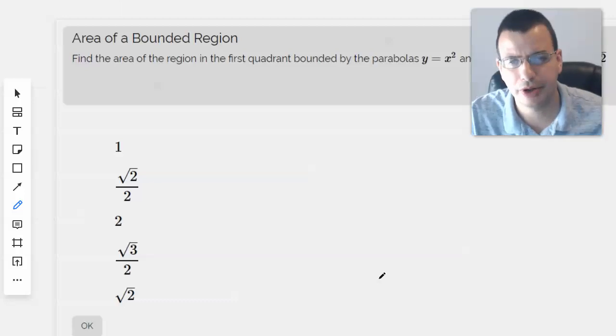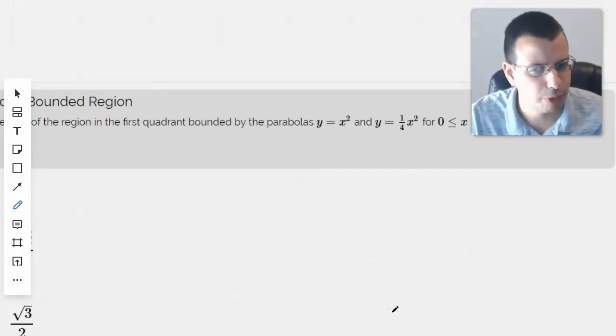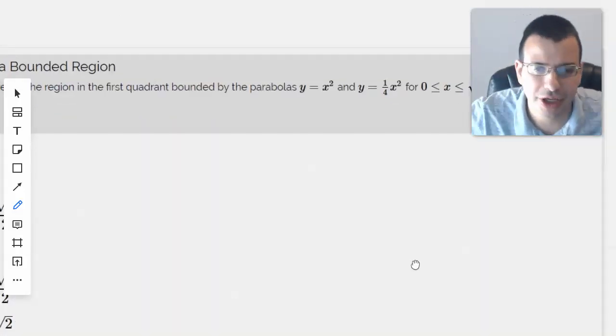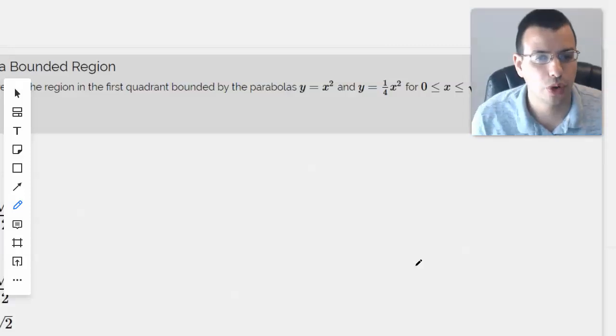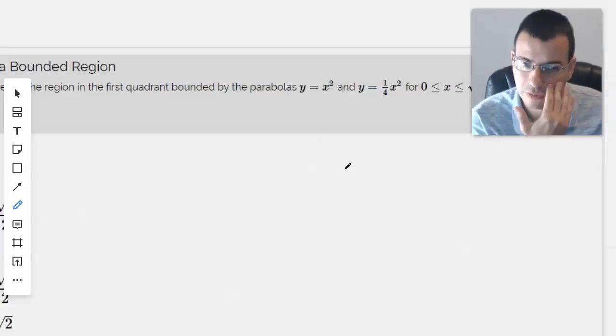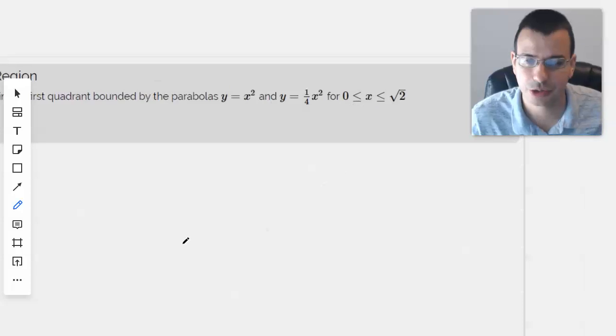Find the area of the region in the first quadrant bounded by the parabolas y equals x squared and y equals one fourth x squared for zero less than x less than square root of two.